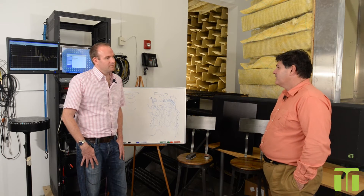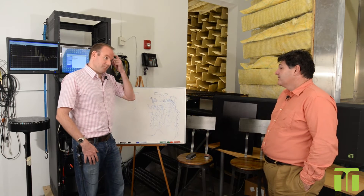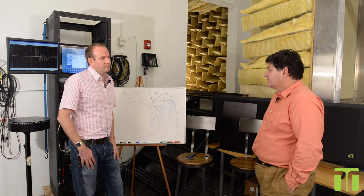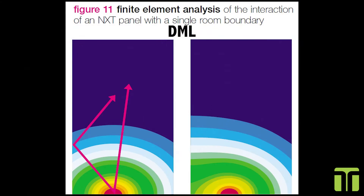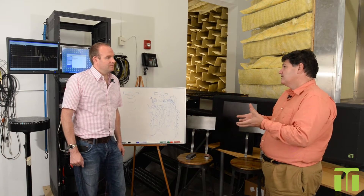Kind of doing the same thing by using a DML. Because you're putting so much energy into the room from the differences — this is a single source versus multiple sources. But you're able to diffuse the cancellation characteristics because you have multiple sources coming off the surface of the DML.